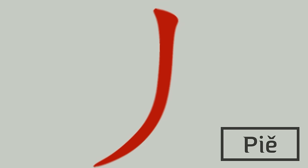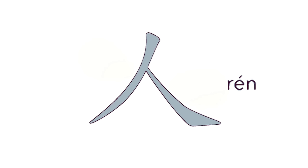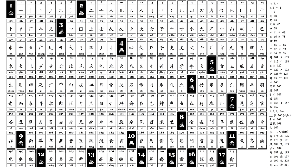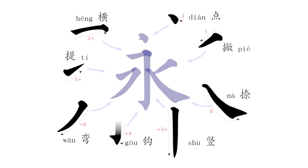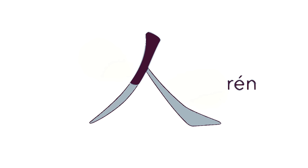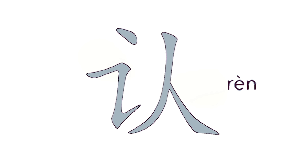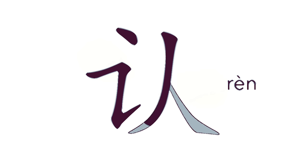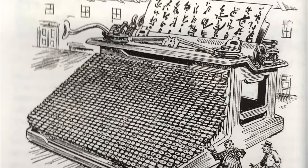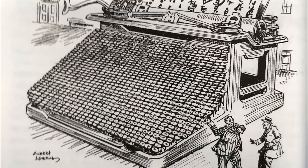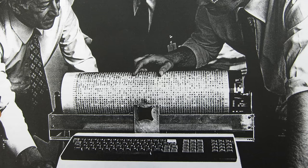So Ren is made up of two of these strokes. There are 214 radicals, and any combination of these can make a character. So Ren, together with this radical, makes a character which means to know or recognize. Now, how would one actually type these characters, if there are so many different radicals and strokes, without some sort of touchpad or stylus?